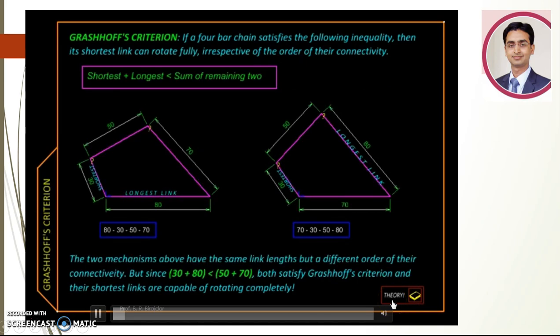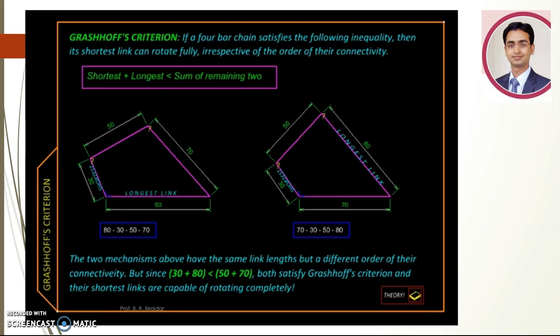For the most part in this course, we will be studying mechanisms with four links connected in a loop. Now this might seem awfully simple to keep anyone busy for a complete semester, but believe me, the variation of motion that it offers with just simple changes in pairs or link lengths is simply mind-boggling. So here is the simplest of its kind: four links, one, two, three, four, connected with revolute pairs here, here, here, and here, forming what is called a four bar mechanism.